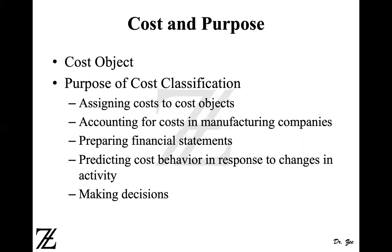So a cost object is not necessarily a product. It's anything you're trying to associate a cost with — calculating the cost of producing something or hiring a worker. Cost object can be anything. Once you know what the cost object is, you can come up with the other classifications of cost.